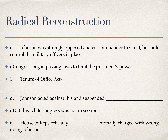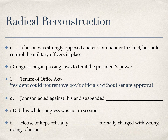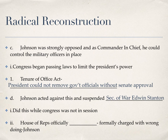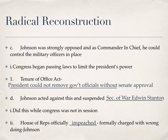One of those laws was called the Tenure of Office Act, which meant the president could not remove government officials without Senate approval — he couldn't fire someone without the Senate approving the removal. While Congress was not in session, Johnson suspended Secretary of War Edwin Stanton. This was done specifically in defiance of Congress — he knew what he was doing. When this happened, the House of Representatives officially impeached Johnson, formally charging him with wrongdoing: breaking the Tenure of Office Act. Johnson is the first president of the United States to be impeached.